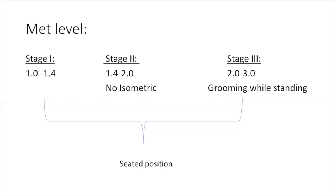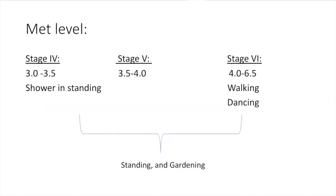Stage three is 2.0 to 3.0 MET. Homer Simpson is allowed to stand while grooming, but he needs to sit while taking a shower. Homer knows he can only sit during the first three stages. Stage four is 3.0 to 3.5 MET — he showers standing, doesn't sit anymore. He's able to do light housework and help Marge Simpson with gardening in the yard.